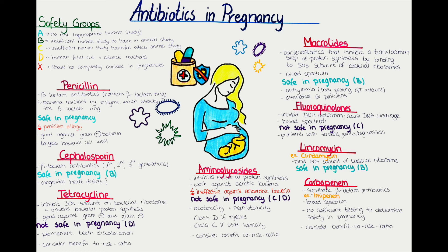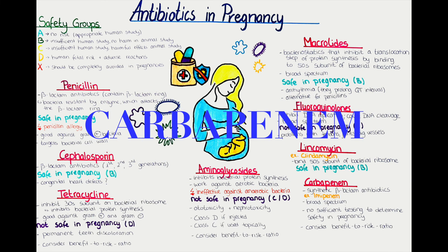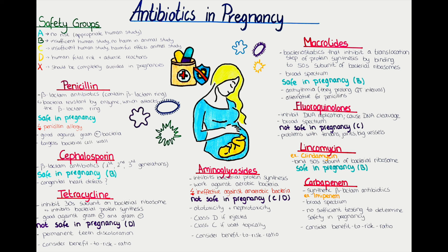The last class we will discuss is the carbapenem antibiotics. These are synthetic beta-lactam antibiotics that differ in structure from penicillins. An example of a carbapenem is imipenem. They are considered broad-spectrum. However, there is not sufficient testing for carbapenems to determine their safety in pregnant women as of now. So these should not be given to pregnant women unless the benefit outweighs the risk.